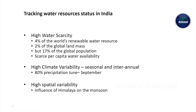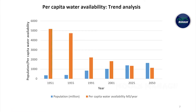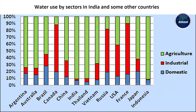Besides, high climate variability and spatial distribution are two important challenges for water management in agriculture in the country. The global per capita availability of water is decreasing continuously on account of increasing population as well as decreasing available water. In India we use more than 80% of the water for agriculture, meaning agriculture water management is an important way to improve water use efficiency and make water available for other purposes.